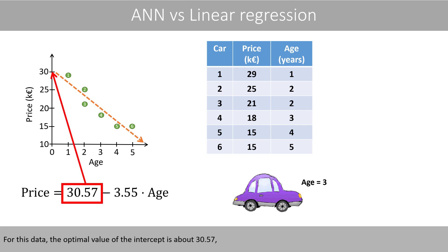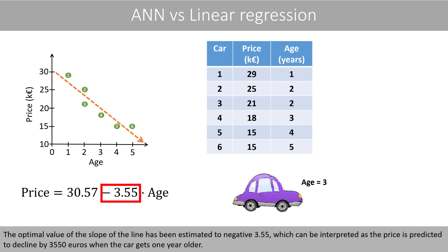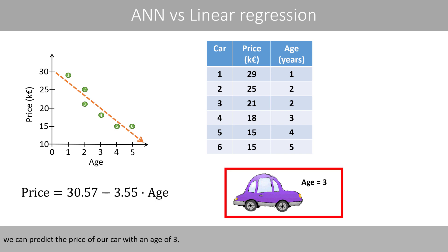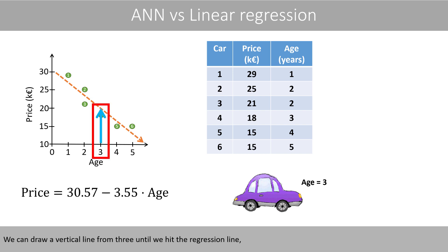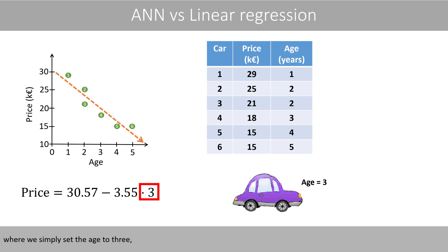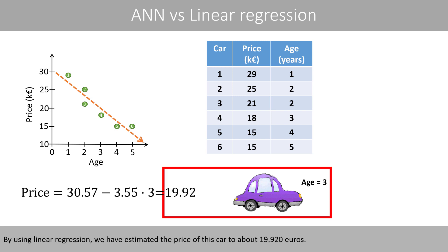For this data, the optimal value of the intercept is about 30.57, which means that the predicted price of a brand new car is 30,570 euros. The optimal value of the slope has been estimated to negative 3.55, which can be interpreted as the price is predicted to decline by 3,550 euros when the car gets one year older. Once we have fitted the line and estimated the parameters of the model, we can predict the price of our car with an age of 3. By using linear regression, we have estimated the price of this car to about 19,920 euros.